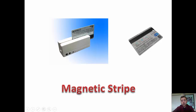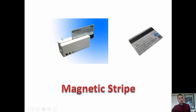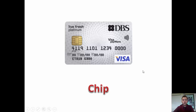A magnetic strip on the back of a credit or debit card is magnetic and contains your information. They're not used as often these days for credit cards, but you'll still see them being swiped on tills in restaurants or bars.